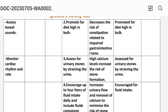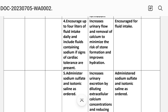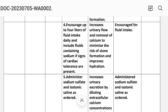Intervention three: assess for urinary stones by straining the urine. Rationale: high calcium levels increase the risk of stone formation. Intervention four: increase fluid intake up to four liters daily and include fluid containing sodium if signs of cardiac tolerance are present. Rationale: this increases urinary flow and removal of calcium, minimizing the risk of stone formation and improving hydration.